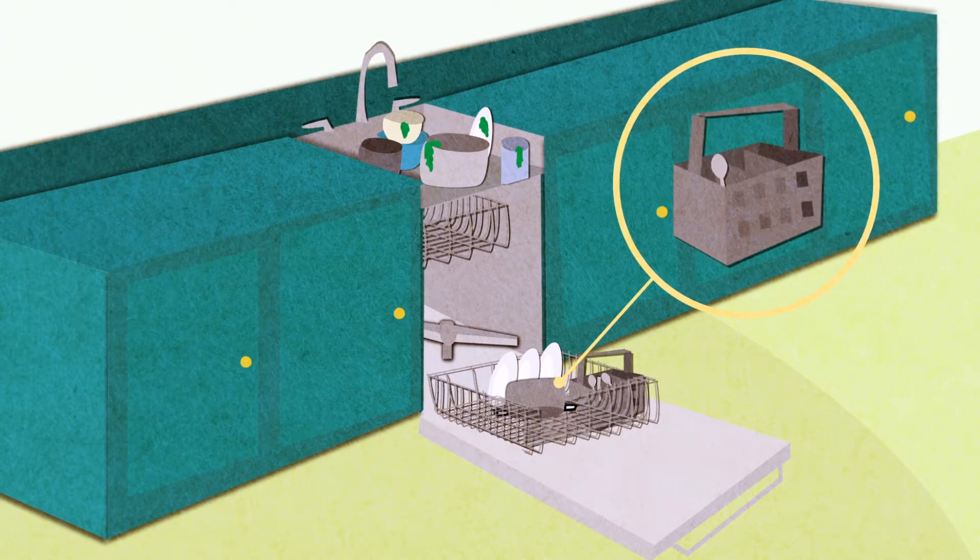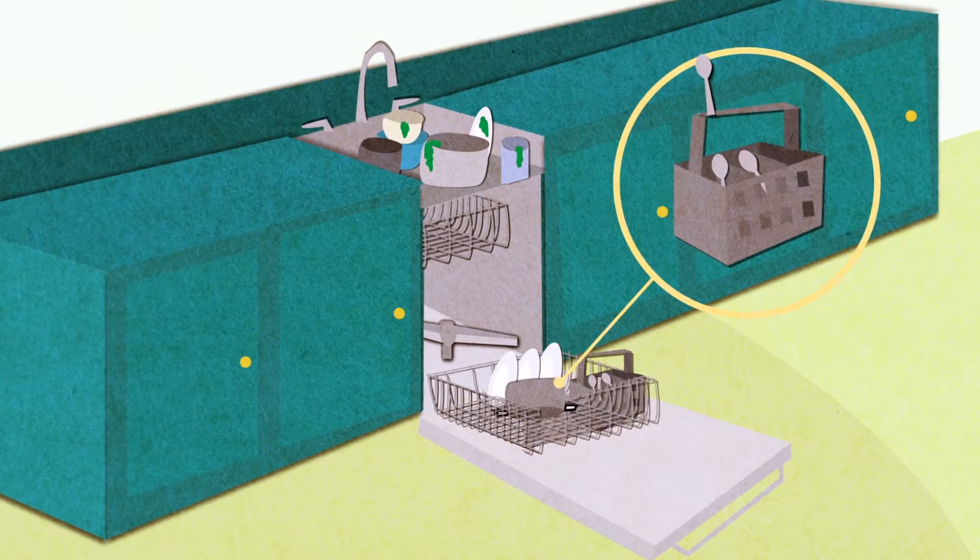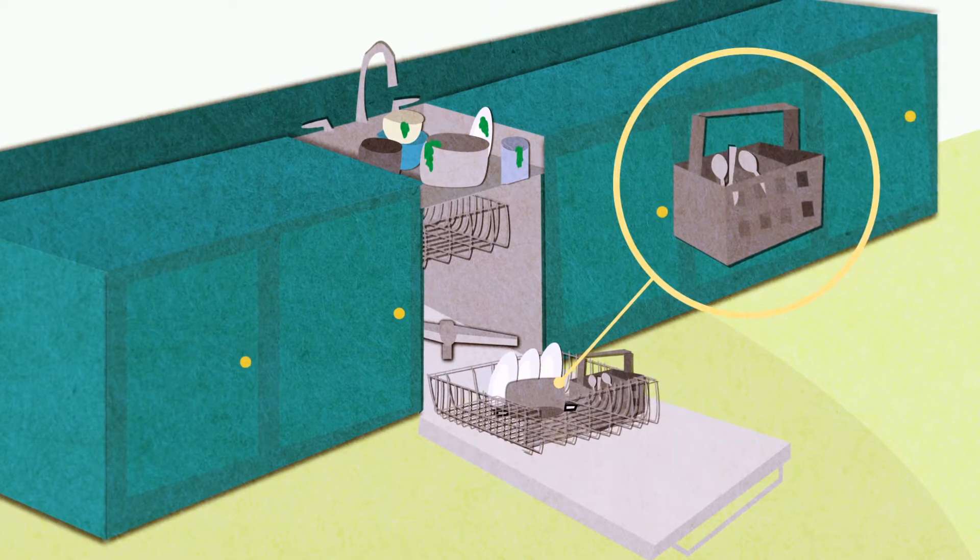Cutlery goes in the basket. All baskets are different, but in general, you don't want the spoons to spoon each other and prevent the suds from doing their job. So either take advantage of spacers or flip every other spoon or fork so it's handle up next to handle down.